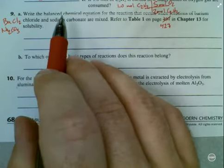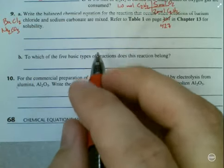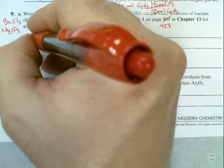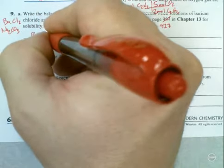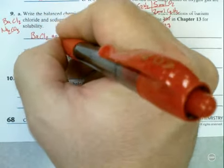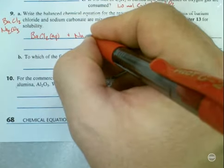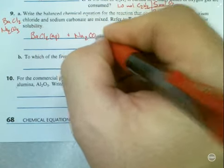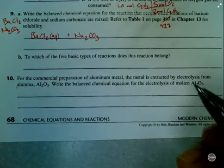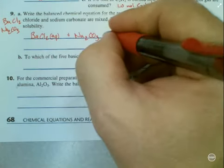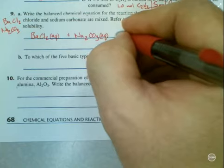So first thing I'm going to do is write what I'm mixing. I'm mixing barium chloride and I am putting it in solution. I'm also mixing in Na₂CO₃ because carbonate is a minus 2 charge, you need 2 sodium to balance that out. That is also in solution.